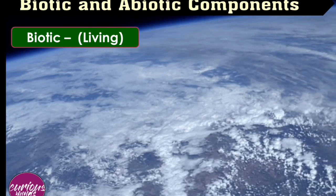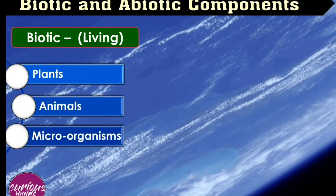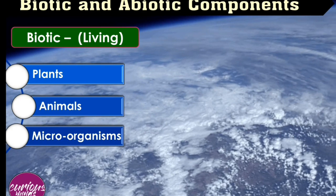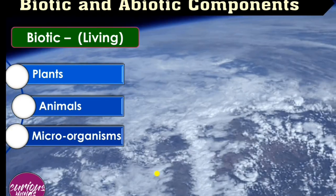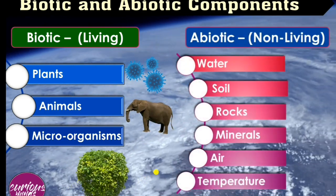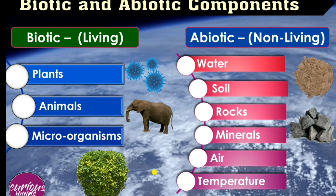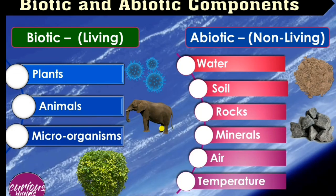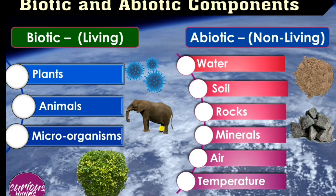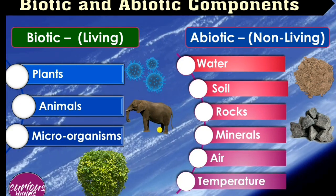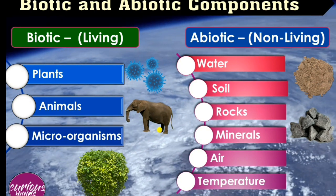There are some abiotic components present in a habitat, which are water, soil, rocks, minerals, air, and temperature. In different habitats, there are different abiotic components, and these abiotic components are interlinked within the habitat.